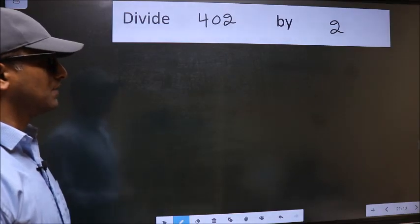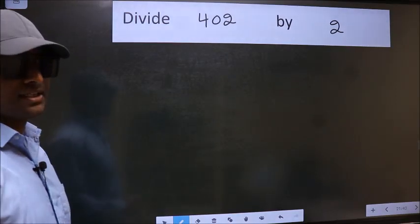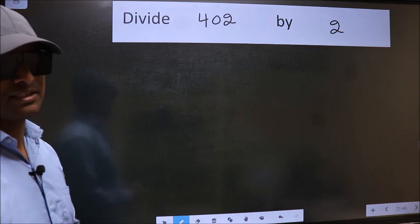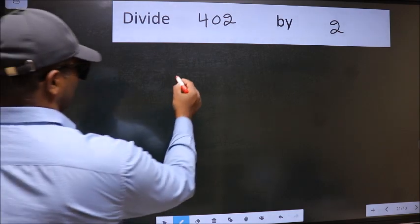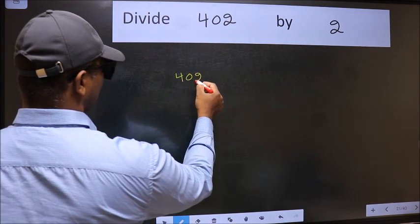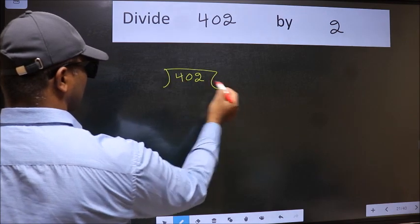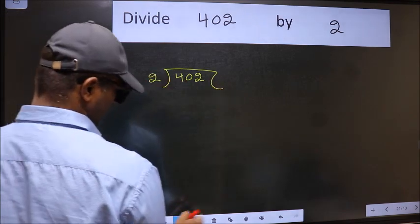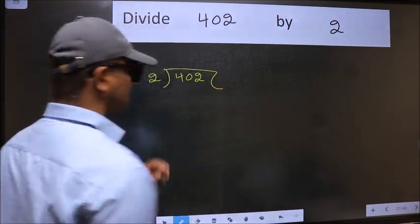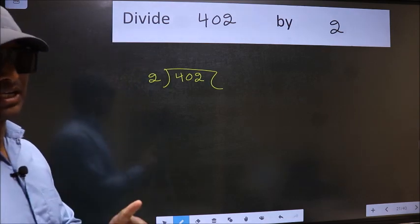Divide 402 by 2. To divide this, we should frame it in this way. 402 and 2 here. This is your step 1.